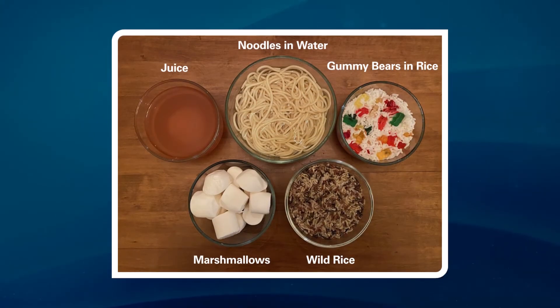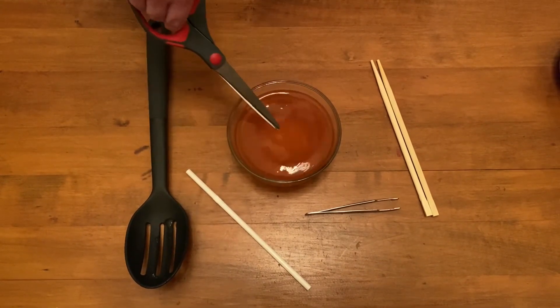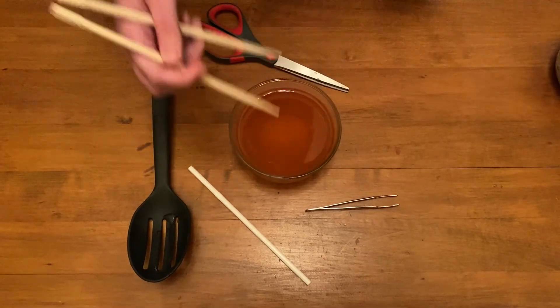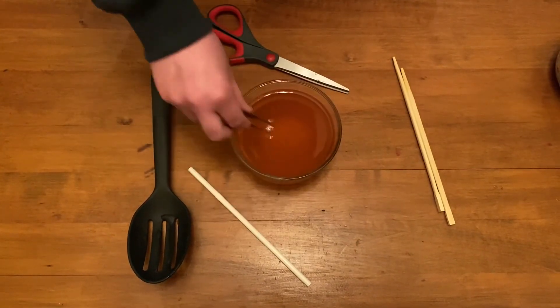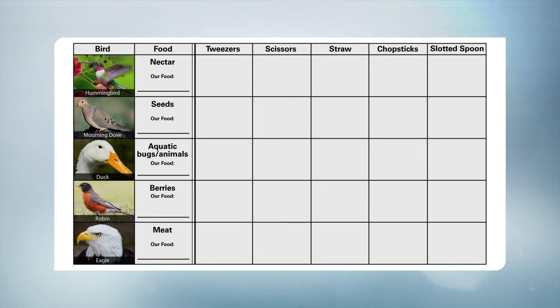Our task is to identify which food best represents what our five birds eat and which tool best represents the type of beak each bird has. Think about what hummingbirds eat — the juice is much like nectar. Try out each tool to figure out which works best for drinking nectar. The straw seems to be the best fit. Record your findings: note that juice represents nectar, place a check for the straw, and X's in the other boxes.